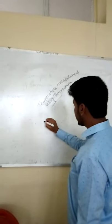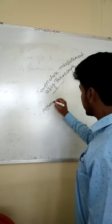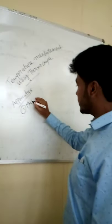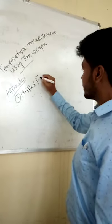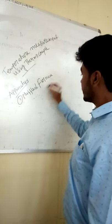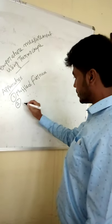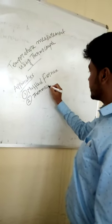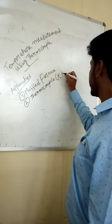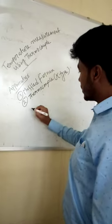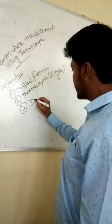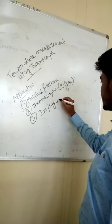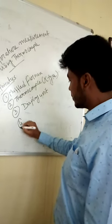Today we will see the apparatus. Number 1: muffle furnace. Number 2: thermocouple, that is K-type. Number 3: display unit. Number 4: multimeter.